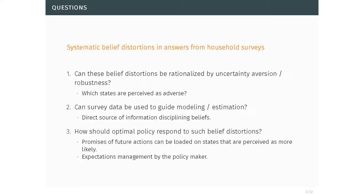To do that we need a little discipline, because if I start writing down arbitrary belief processes I quickly start overfitting. So we will postulate a theory to rationalize these biases within a model where agents have concerns for robustness. This puts discipline on the type of belief processes that arise in equilibrium. Finally, we will try to use the survey data to inform model building and estimation of macroeconomic models.